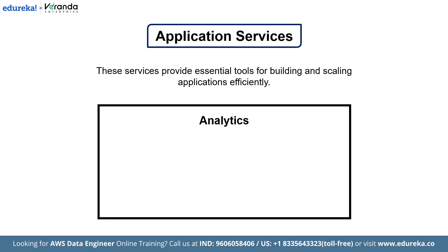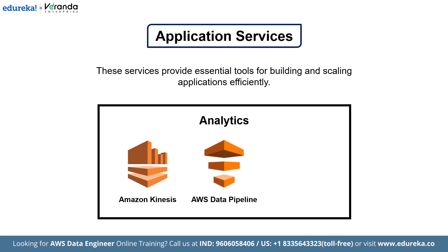Analytics services are up next, enabling us to process and analyze vast amounts of data for insightful decision making. First here on the list we have Amazon Kinesis. Amazon Kinesis makes it easy to collect, process and analyze real-time streaming data so you can get timely insights and react quickly to new information. Next, AWS Data Pipeline is a web service that helps you reliably process and move data between different AWS compute and storage services. Next, Amazon EMR, which stands for Elastic MapReduce. Amazon EMR is a cloud big data platform for processing massive amounts of data using open source tools such as Apache Spark, Hadoop and Presto.